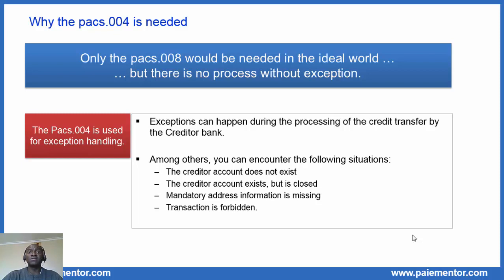Among others, you can encounter the following situations: the creditor account does not exist at all — so where will you put the money? Or the creditor account exists but is closed, so the money cannot be credited on that account. Mandatory address information may be missing; in that case, the creditor bank cannot process the transaction and will return the funds. Or the transaction may be forbidden. There are many other reasons. When these situations occur, the creditor bank will send the money back to the debtor bank. You can find many other situations in the SEPA implementation guidelines.